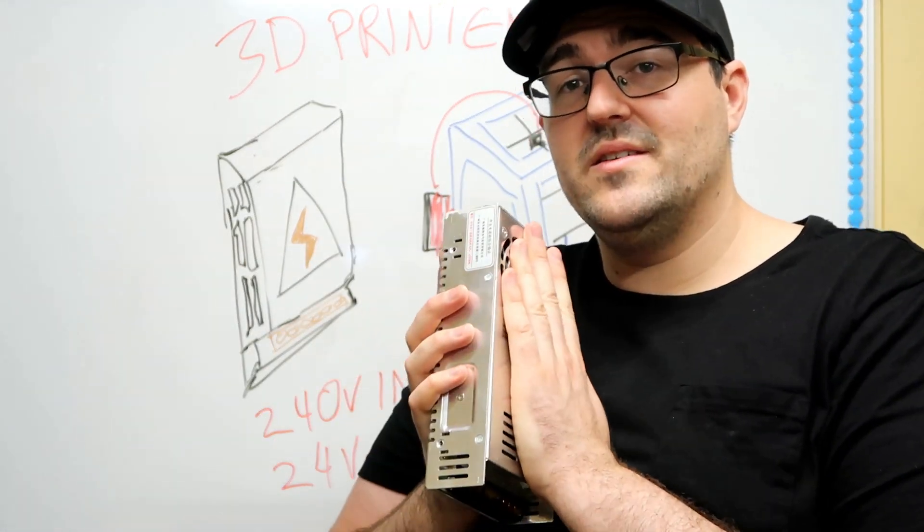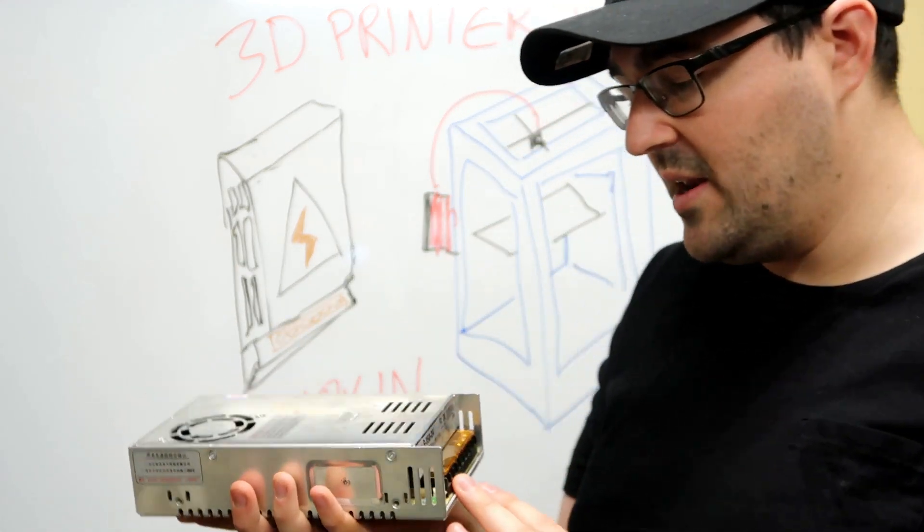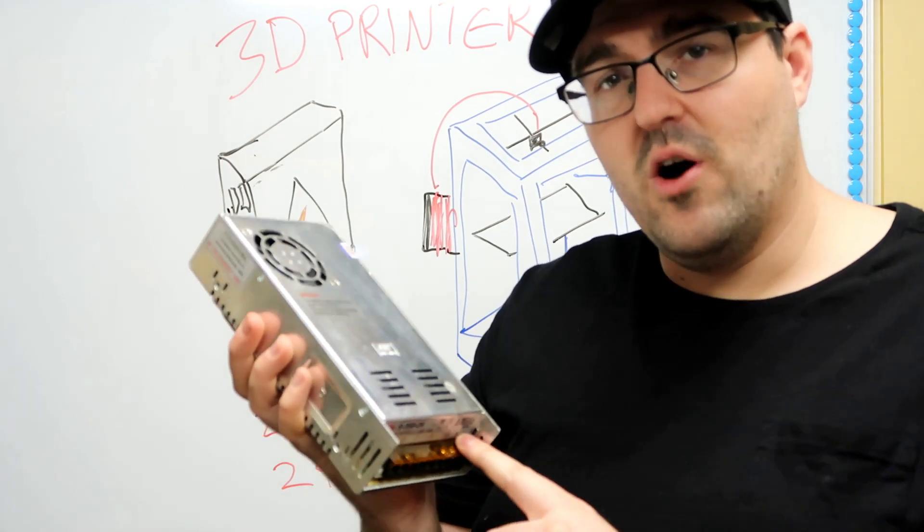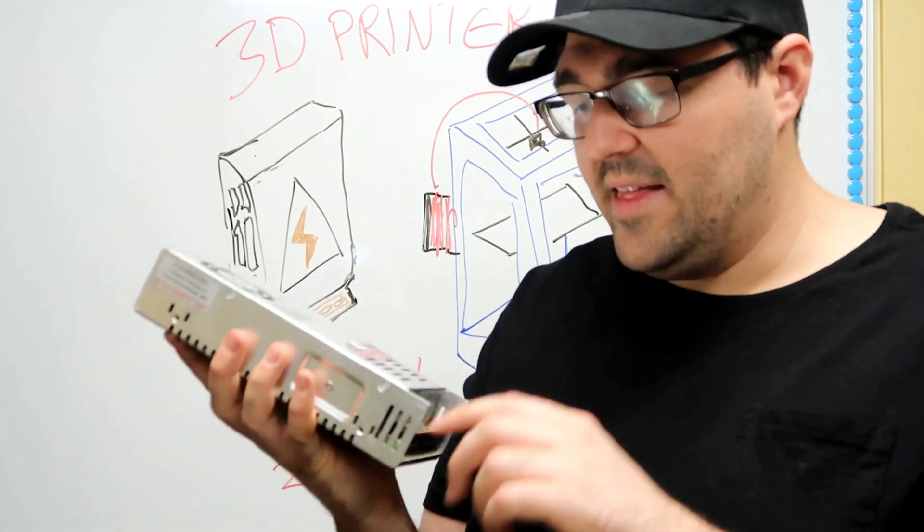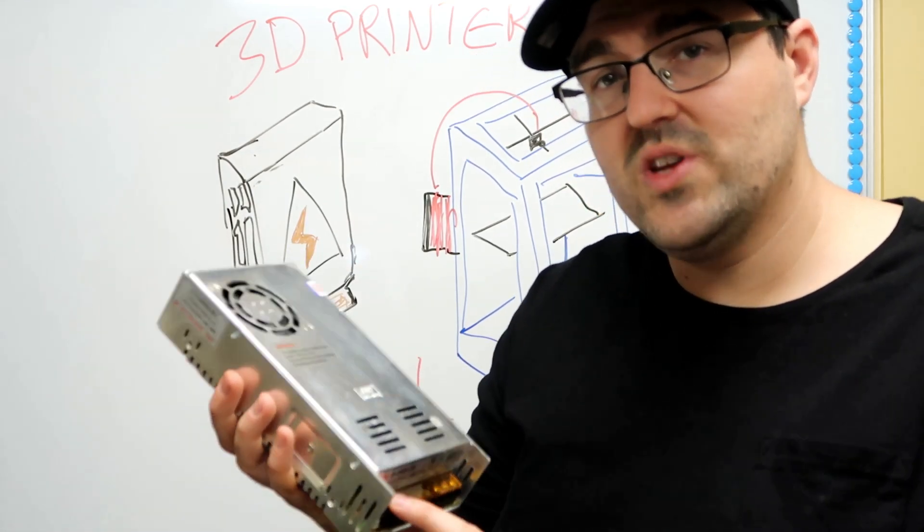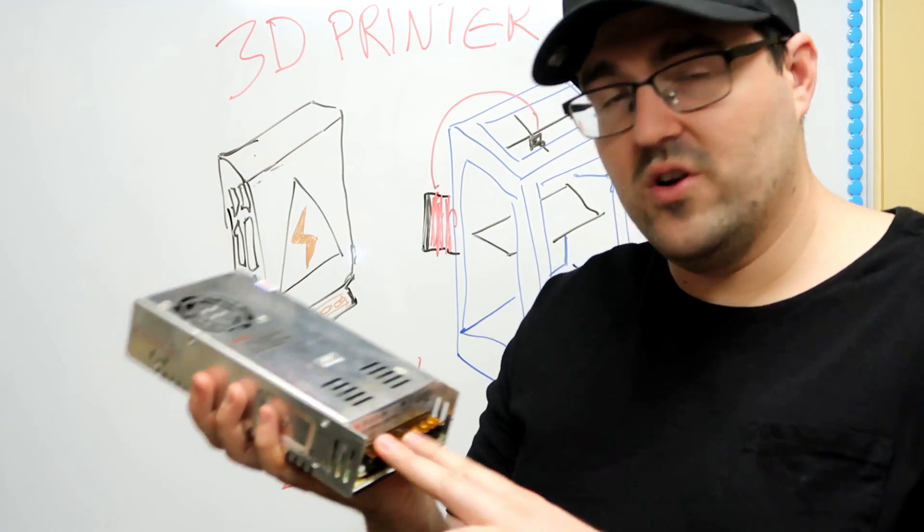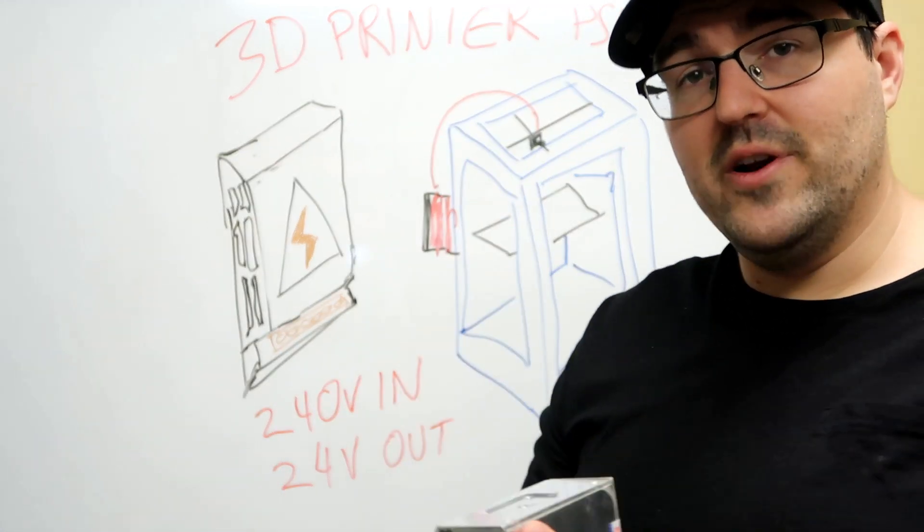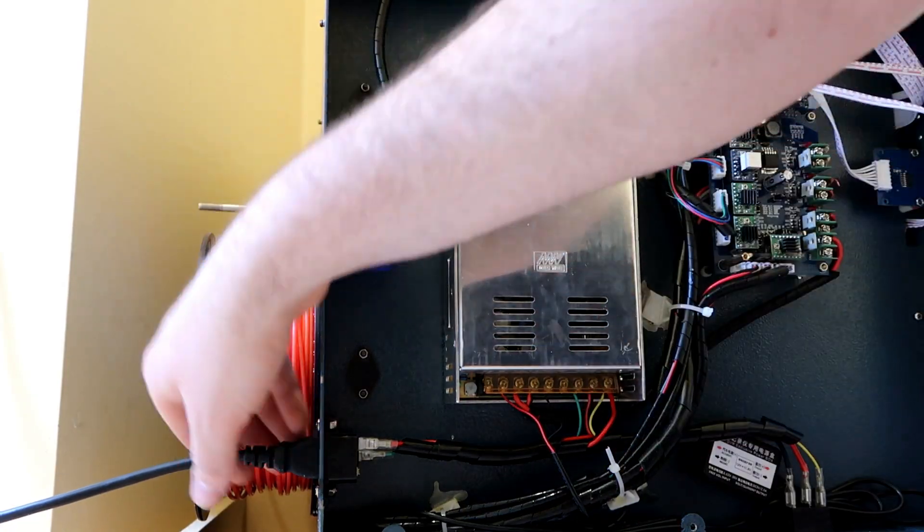Now that we know that power supply isn't working anymore, I've tested this one already, hooking up the 240 volts and switching it on. The LED light comes up and we've got voltage across the output terminals. So let's go throw it in the printer.